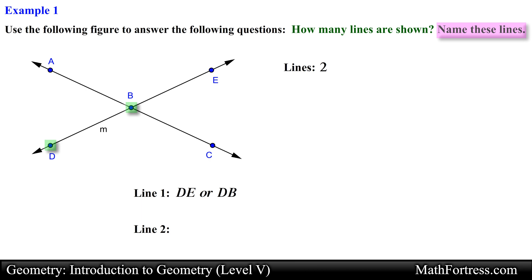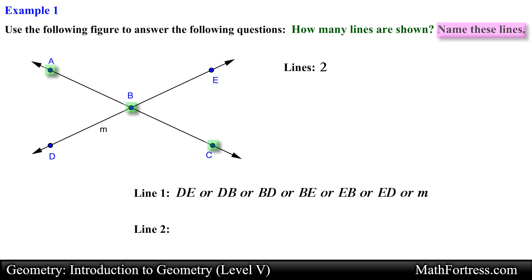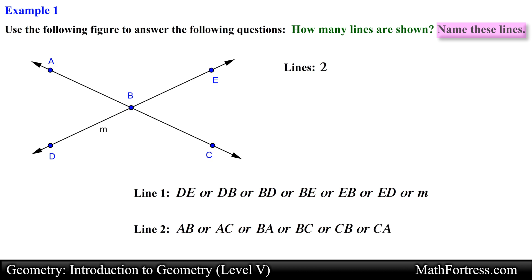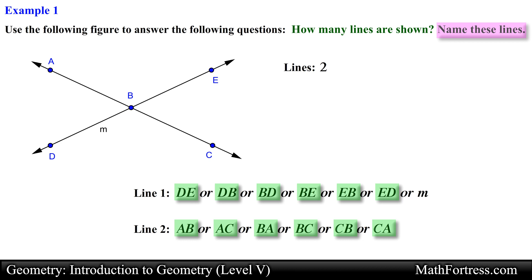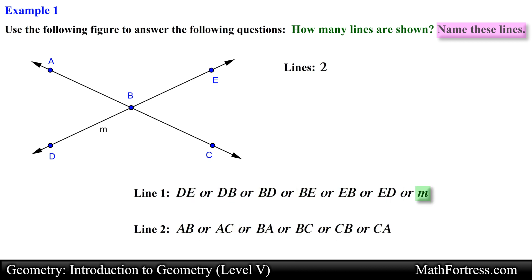This line can be named as line DE, line DB, line BD, line BE, or line ED. Notice that this line is labeled with the lower case letter M, so we can also name this line as line M. In the same manner the line that contains points A, B, and C can be named as line AB, line AC, line BA, line BC, line CB, or line CA. Remember, lines can be named by denoting two points located on the line or by using a lower case letter whenever possible.